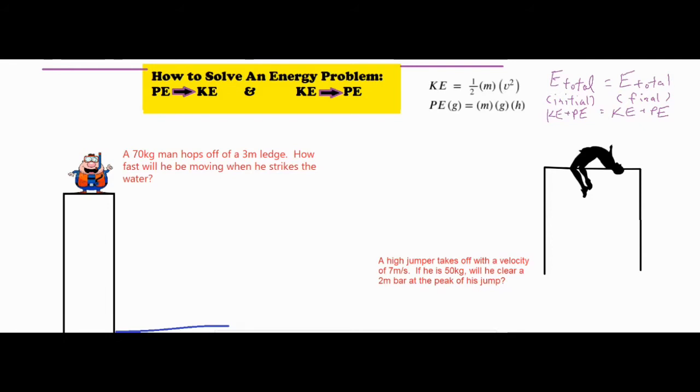So if you take a look at our first problem, we have a 70 kilogram man who hops off a 3 meter ledge. How fast will he be moving when he strikes the water?